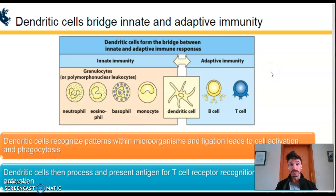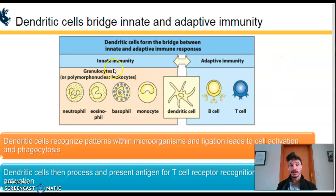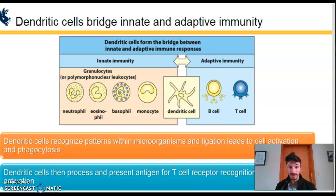Dendritic cells are the bridge between the innate and adaptive immune response — two connected arms of immunity. The innate immune system buys the adaptive immune system time; without it, invading microbes would likely kill us before the adaptive response could catch up. In some cases, the innate immune system can clear infections entirely on its own.